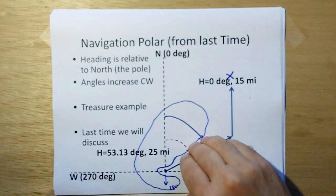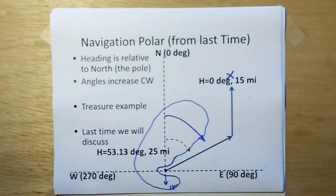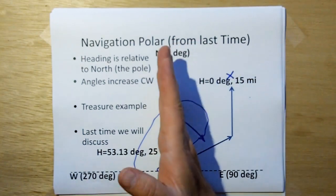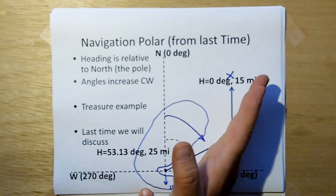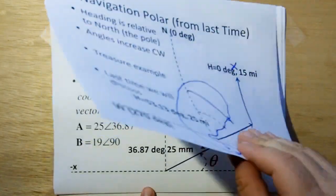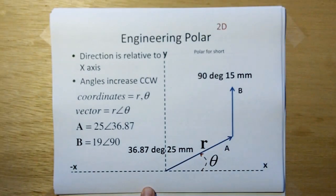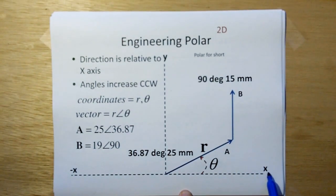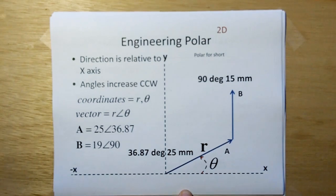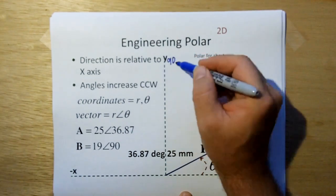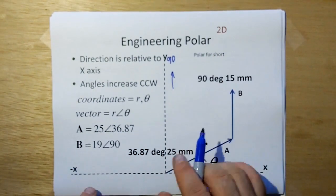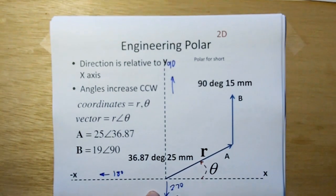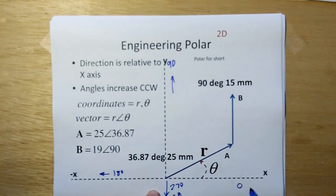This will be the last time we discuss navigation-type polar. The reason I brought this forward is to show you that what engineers use evolved from this. Navigation polar is called polar because the angle of direction is relative to the north pole. In engineering, we use the same term polar, but there's no north pole — our angles start from the x-axis. So 90 degrees is in the y-direction, 180 degrees is in the minus x-direction, 270 degrees is in the minus y-direction, and 0 degrees is on the x-axis.